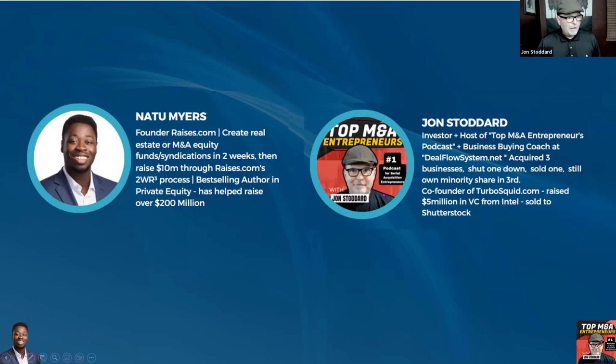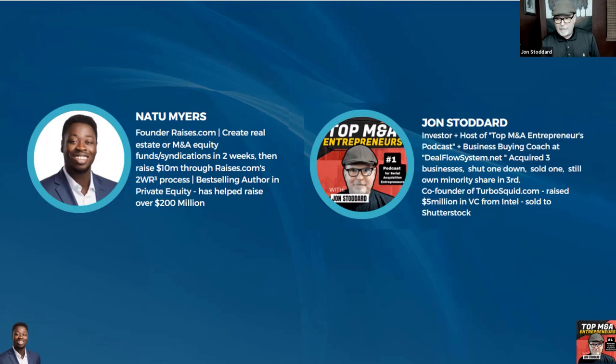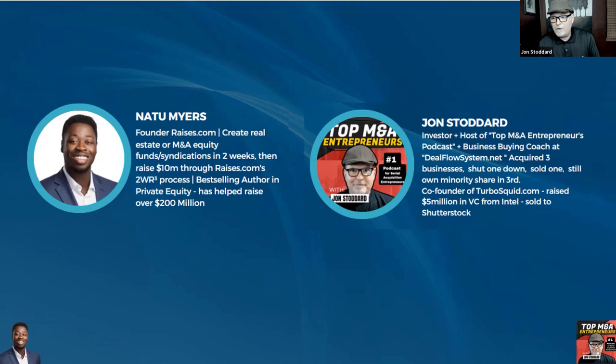I am John Stoddard. I'm an investor still working on my fourth acquisition, looking for the right deal. I'm the host of Top M&A Entrepreneurs, a podcast interviewing serial acquisition entrepreneurs — I've done close to 100 interviews. I'm also a business buying coach at DealFlowSystem.net. I acquired three businesses: I shut one down, sold one, and I'm still a minority shareholder in the third. I co-founded TurboSquid as VP of Sales and Marketing, raised $5 million from VC including Intel, and it was later sold to Shutterstock.